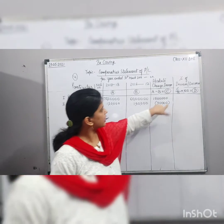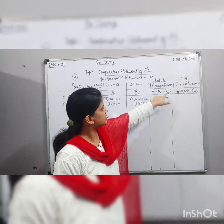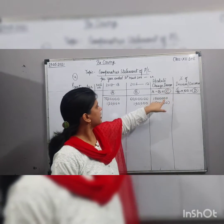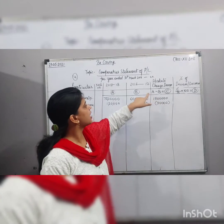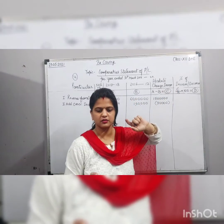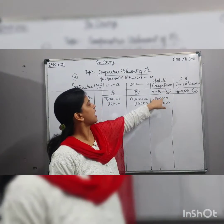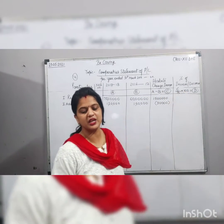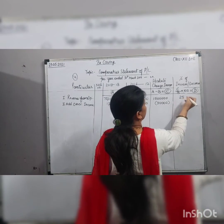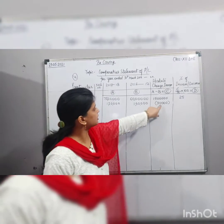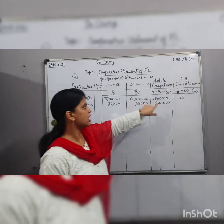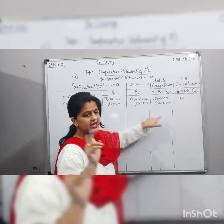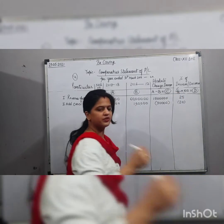For the percentage change on revenue from operations: 15,00,000 upon 60,00,000 into 100 = 25%. For other income, the change is a decrease of ₹30,000, so the percentage is 30,000 upon 1,50,000 into 100 = 20%, written in brackets as negative: (20).